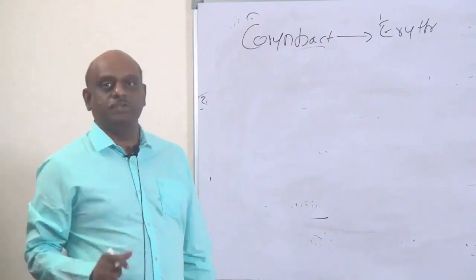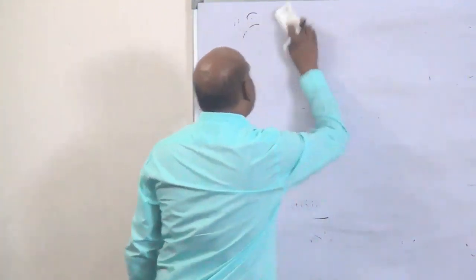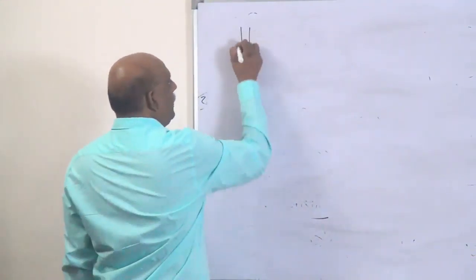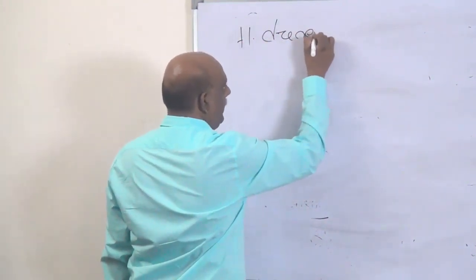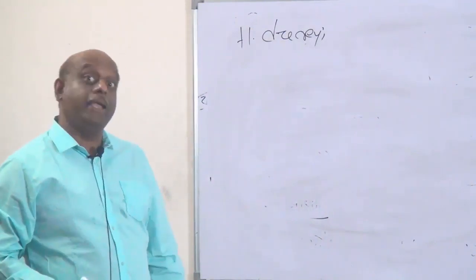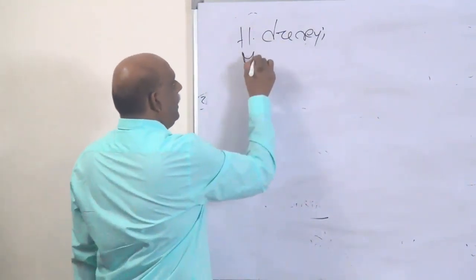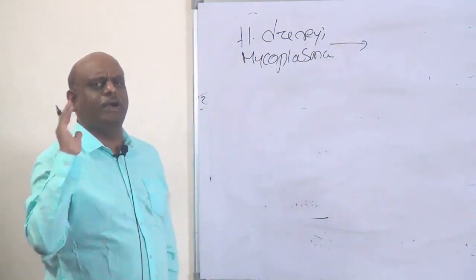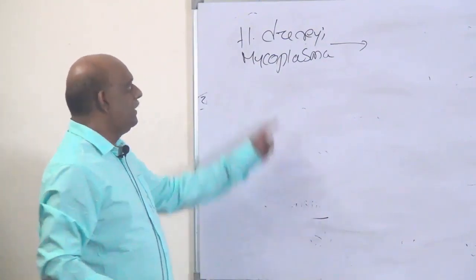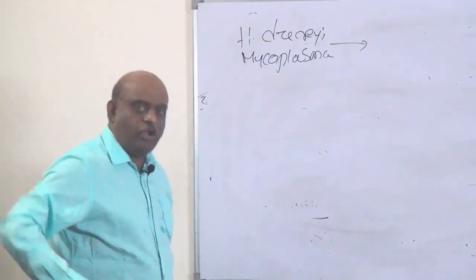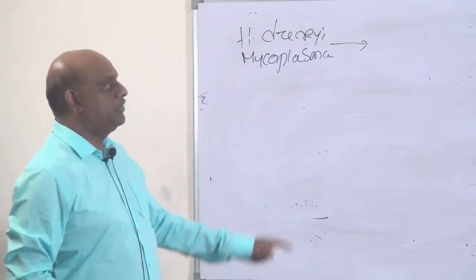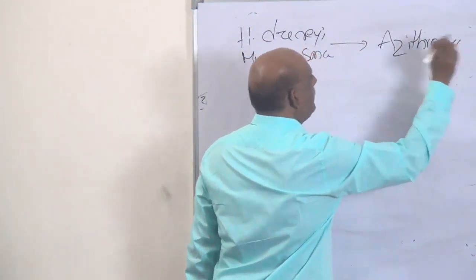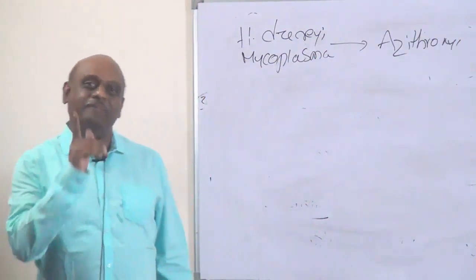Two important conditions: Haemophilus ducreyi and mycoplasma. Can anybody tell the drug of choice? You should remember: azithromycin is the drug of choice for both Haemophilus ducreyi and mycoplasma. Answer from the top of your head.